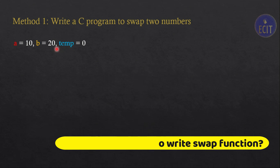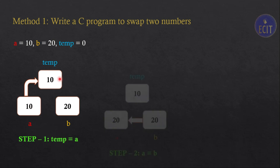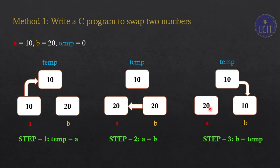Let's talk about the logic and then I will show you the C program. This logic is really simple. Consider a equal to 10, b equal to 20, and temp is another box. Step one: we will move the value of a to temp, so we write temp equal to a. Step two: we move whatever value is in b to a, because we already have a backed up in temp, so we write a equal to b.